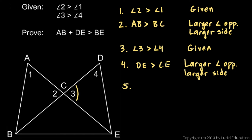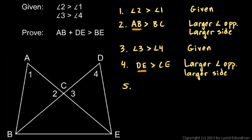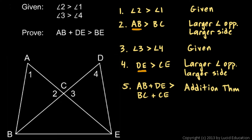Now step five. AB is bigger than BC and DE is bigger than CE, so the two bigger things added up must be more than the two smaller things added up. Therefore, AB plus DE is greater than BC plus CE. The reason for this step is the addition theorem of inequality.